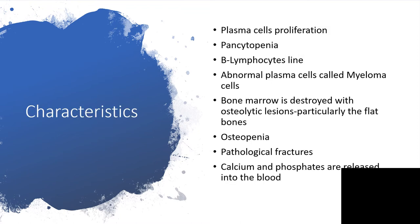What are the characteristics of multiple myeloma? This involves plasma cells, and plasma cells are now proliferating. So you can say multiple myeloma has plasma cell proliferation, and there is pancytopenia — all blood cell lines will be affected and they won't form correct blood cells.